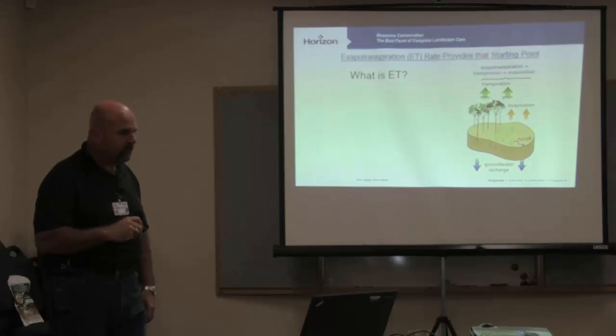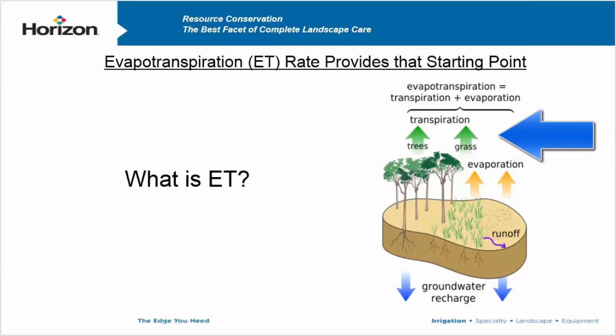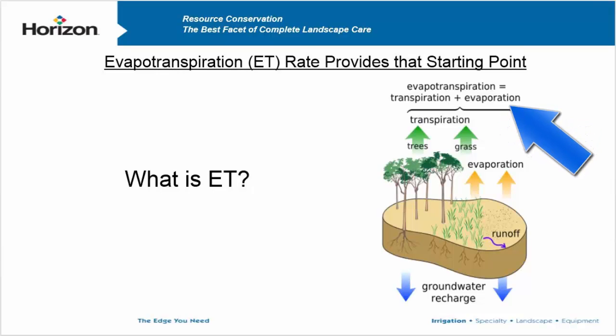We need a starting point and the starting point is ET. Does everybody know what ET is? No, it's not that little guy that flew around in the 80s — yes, it is evapotranspiration. We can make this really, really simple. ET in a simplified form is the rate at which soil gives off moisture in evaporation combined with the rate at which trees and plant material give off moisture. You put evaporation and transpiration together, you get evapotranspiration — ET.